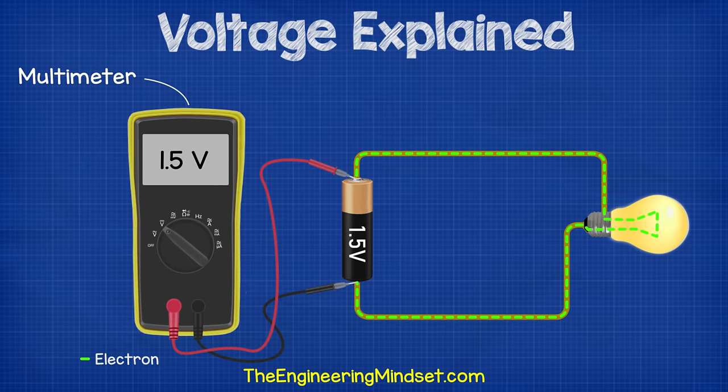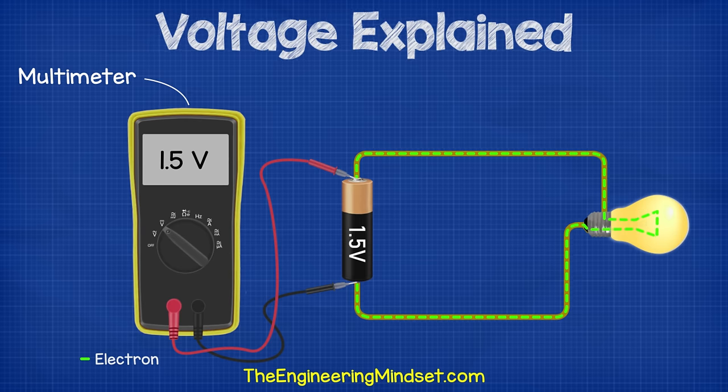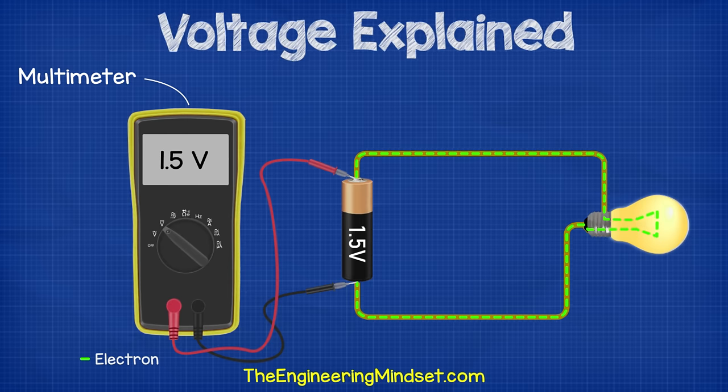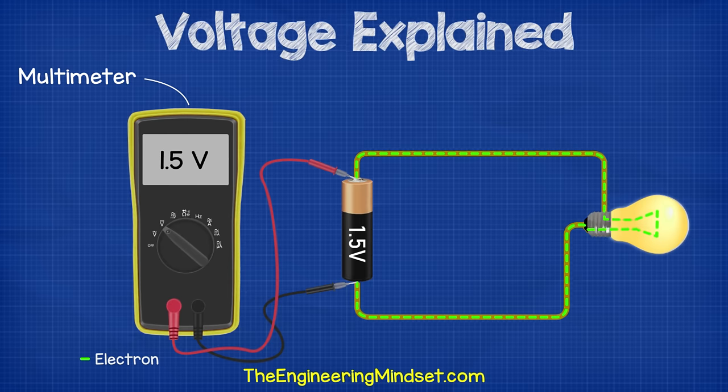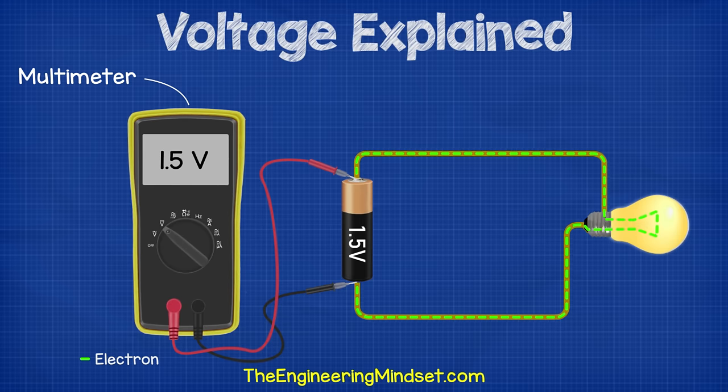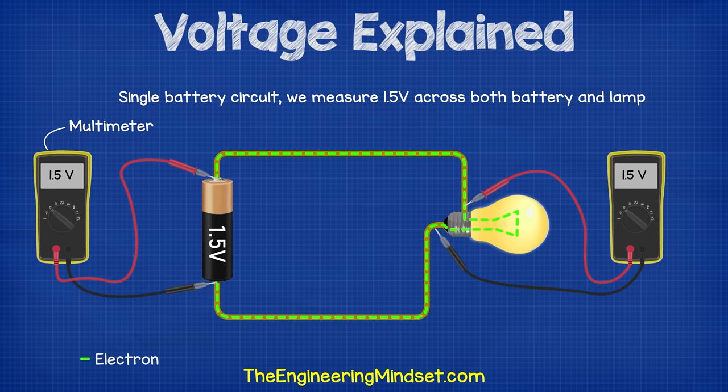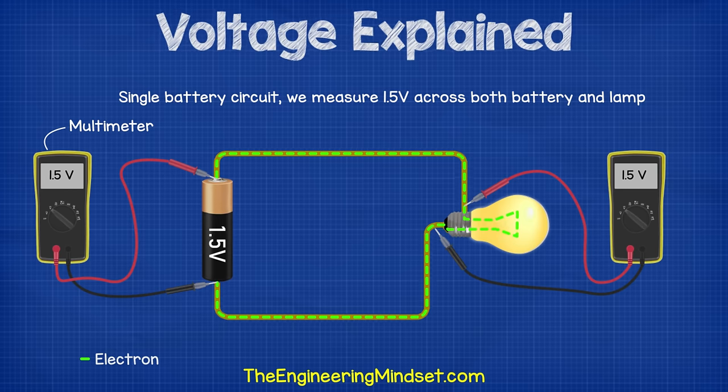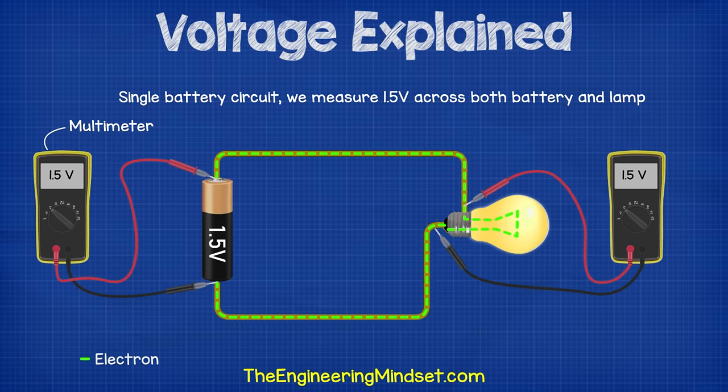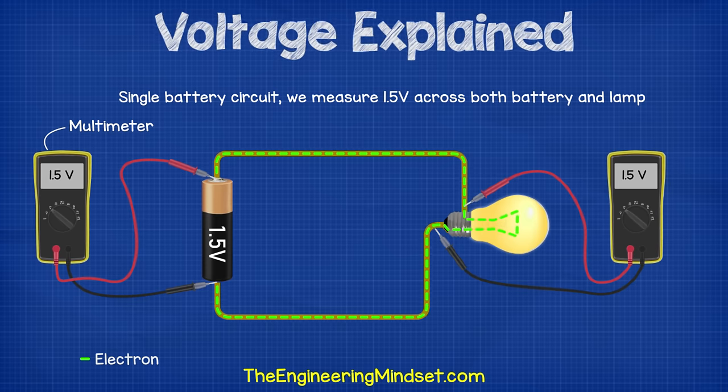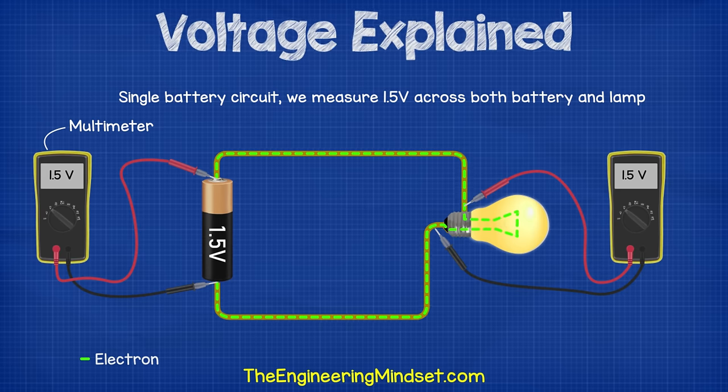As we saw earlier, we can measure volts with a voltmeter. This can be separate or part of a multimeter. If you don't have a multimeter yet, you can pick one of these up really cheaply. I highly encourage you to have one in your toolkit. I'll leave a link in the video description down below for where to get one for a good price. To measure voltage, we have to connect to the circuit in parallel across the two points we would like to know the voltage or potential difference for. So for a single battery in a circuit, then we measure 1.5 volts across the battery, and we also measure 1.5 volts across the lamp. The battery is providing 1.5 volts to the lamp, and the lamp uses 1.5 volts to produce light and heat.